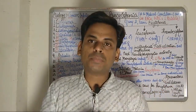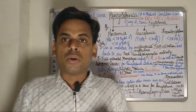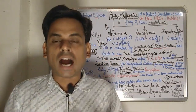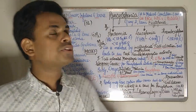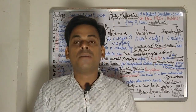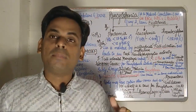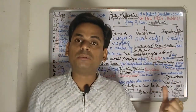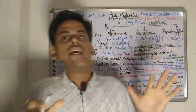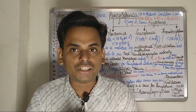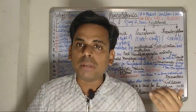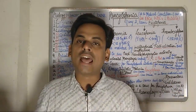Pancytopenia is a medical condition in which there is a decrease in all three cellular components of blood — that is the RBCs, the WBCs, and the platelets. This topic has been very frequently asked and is a favorite question in professional exams, where you are asked to write about the etiology and the exact mechanism of pancytopenia. The causes can be multiple.